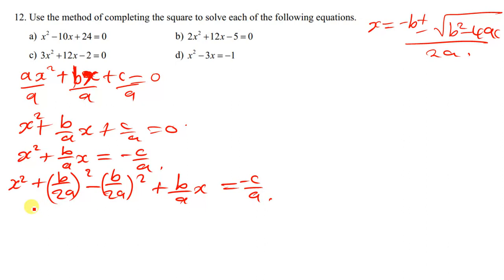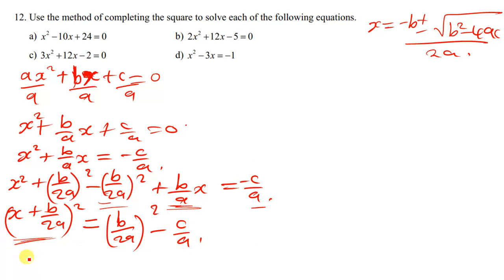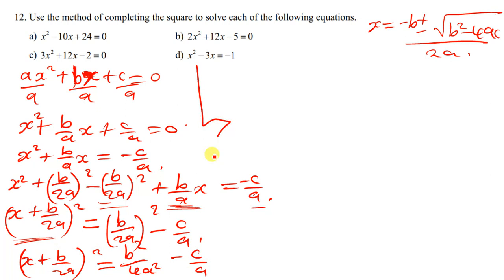From here we can complete the square. We have x plus b over 2a, all squared. We take the negative b over 2a squared term to the other side of the equal sign, giving us b squared over 4a squared minus c over a on the right side. We then find the common denominator to simplify.